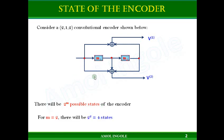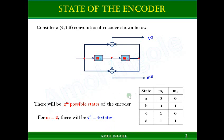Here the number of memory units are 2, so there will be 2 raised to power 2, that is 4 states. These 4 states are the different bit combinations that the memory units m1 and m2 are holding. For example, if m1 and m2 are holding 0,0 bits, this will be called a state of the encoder. So for this two-memory-unit encoder there will be four possible states.